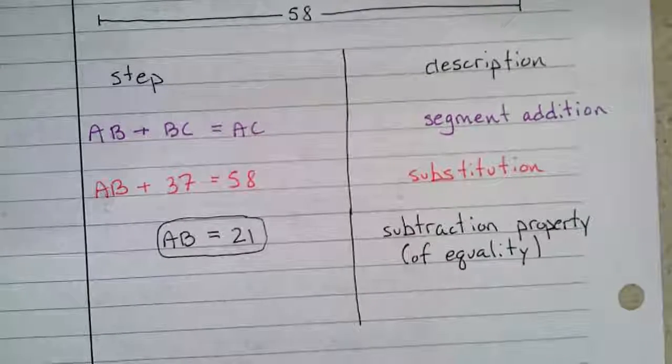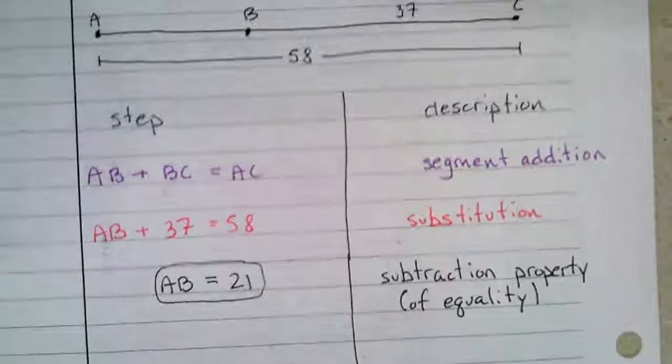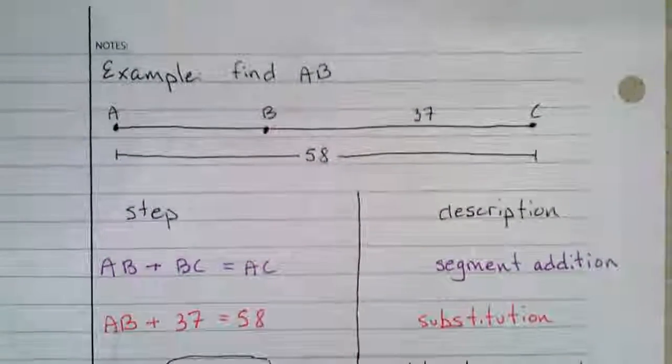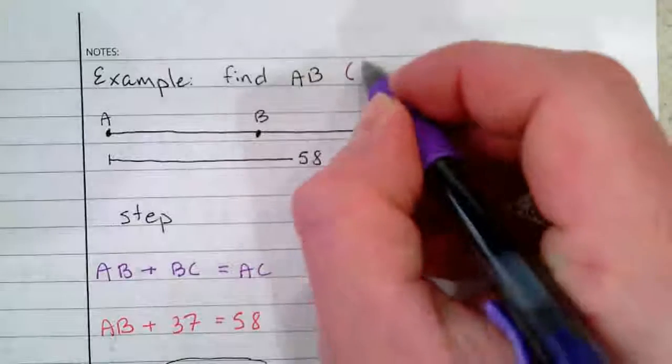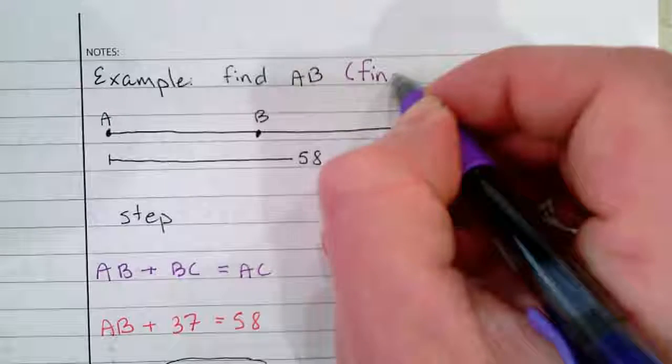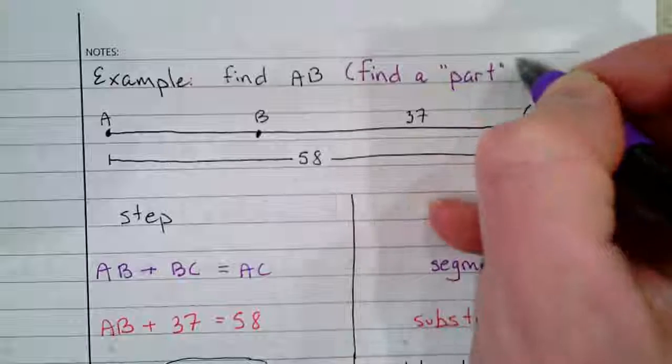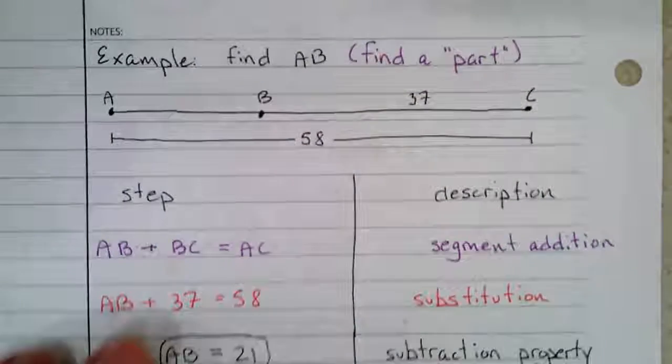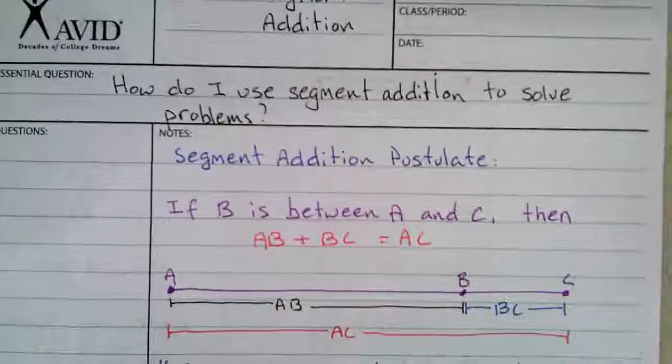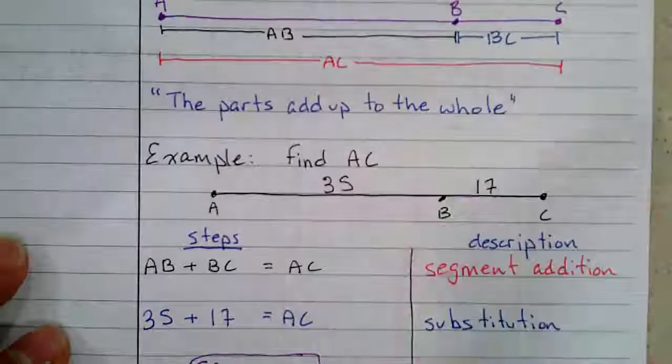It means you can subtract the same amount from each side and still be equal. Notice these two examples are each a little bit different. In this case we were finding a part, in which case we had to do some subtracting. And on this side here, in this example, this was an example of finding the whole.